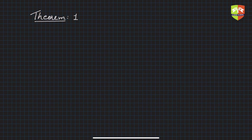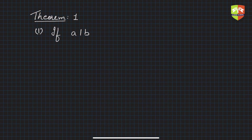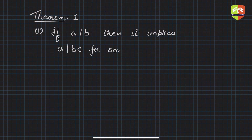The first theorem related to divisibility has some sub-parts. The first one is: if a divides b, then it implies that a also divides bc for some integer c.